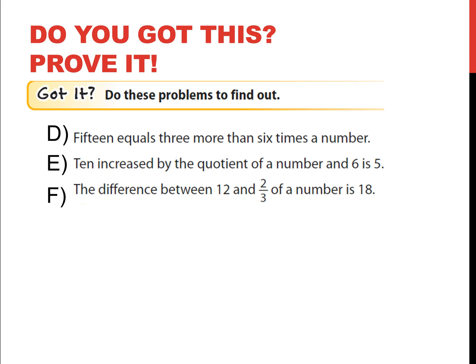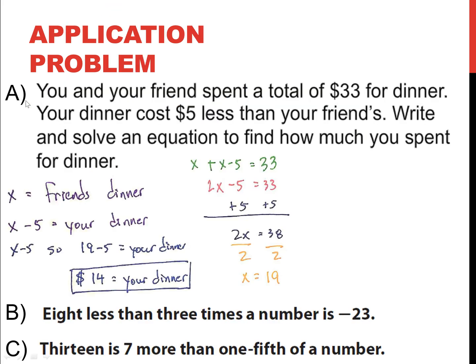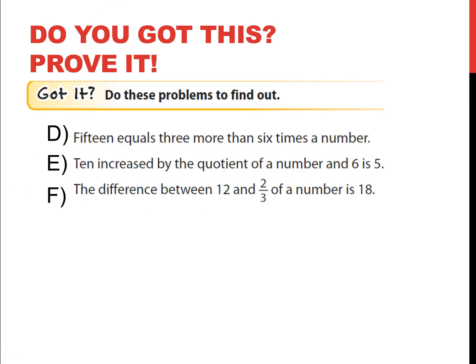Example E, 10 increased by the quotient of a number and 6 is 5. And example F, the difference between 12 and 2 thirds of a number is 18. So, go ahead and pause the video to solve these three problems like you did examples B and C. I'll be here when you get back.